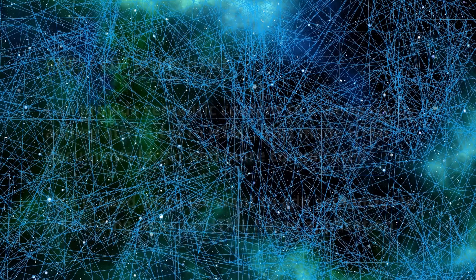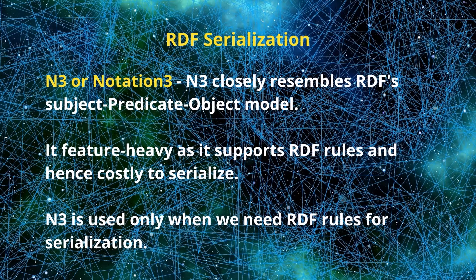Notation 3, or N3, closely resembles RDF's subject-predicate-object model, making it easy to understand how RDF works. The drawback of N3 serialization is that it is feature-heavy, as it supports RDF rules, making it costly to serialize. N3 is used only when RDF rules are needed for serialization.